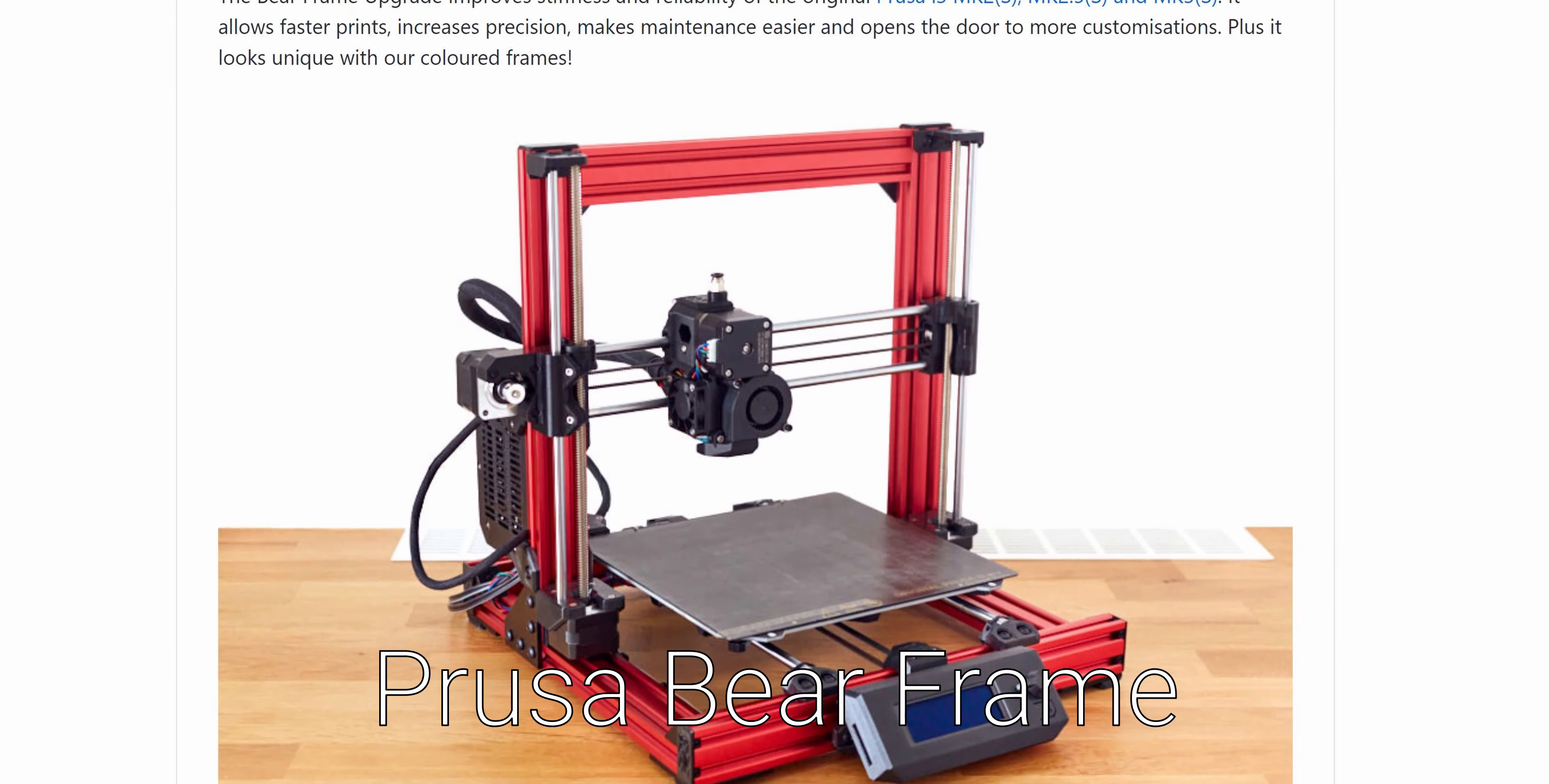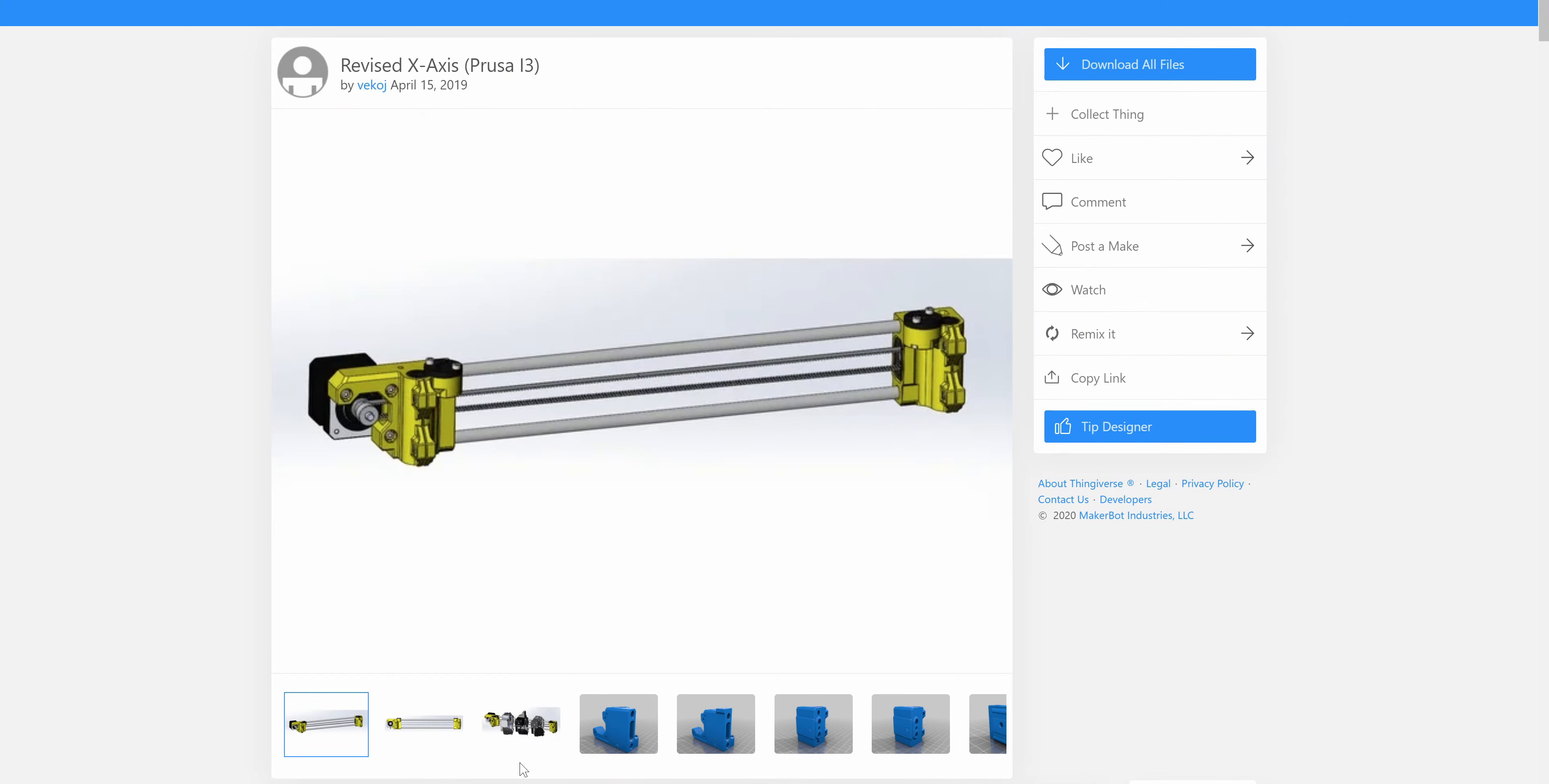If you have the Bear mod installed on your Prusa Mark 3S printer, then perhaps you know about the revised X-axis mods.